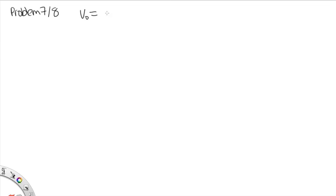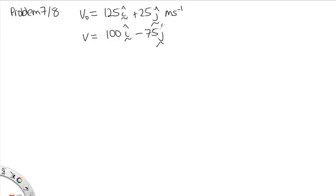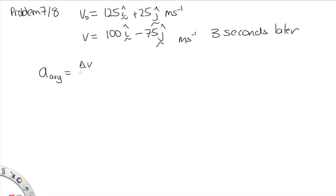Problem 7 for 1121, or 8 for 1131. In this question, we're told that at time t0, the velocity of an object is given by 125i plus 25j meters per second. At 3 seconds later, its velocity is equal to 100i minus 75j. We're asked what is the average acceleration of the object over this time period. The average acceleration is equal to the change in velocity over the time interval.